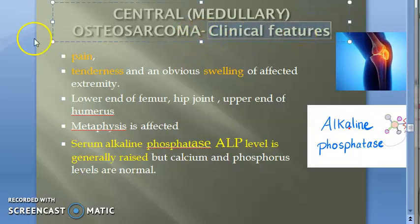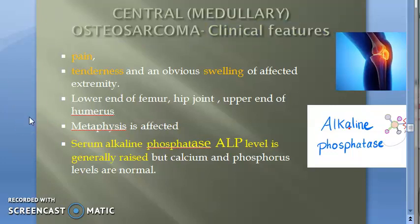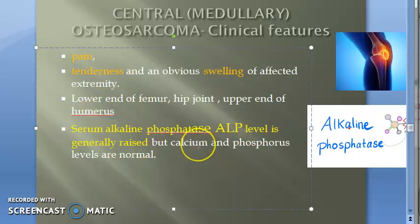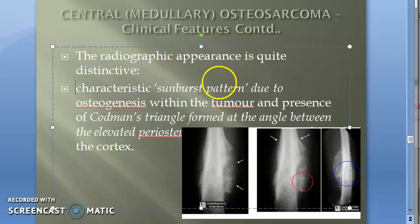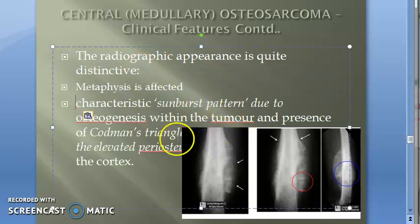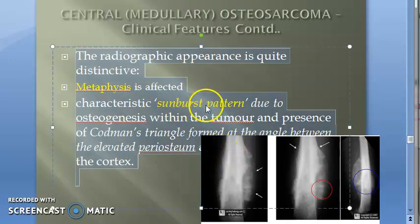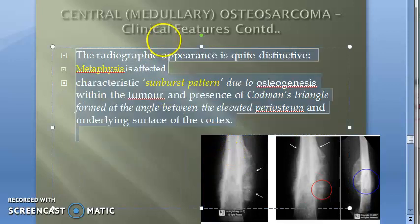Now let us look at the clinical features. A patient will present with pain, tenderness, and swelling in the affected extremity — typically the lower end of femur, upper end of humerus, around the shoulder joint or hip joint. The metaphysis is affected. Serum alkaline phosphatase (ALP) will be elevated. Radiologically, a sunburst pattern is seen at the metaphysis.